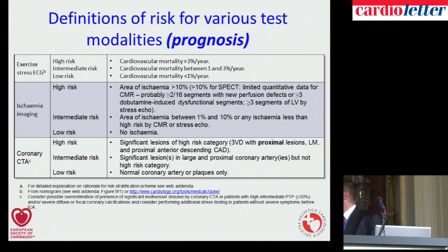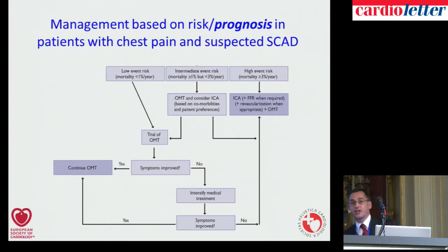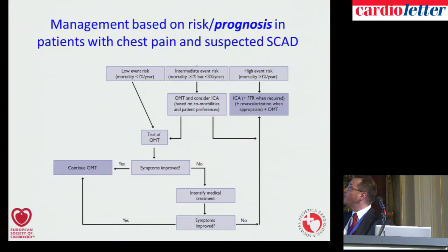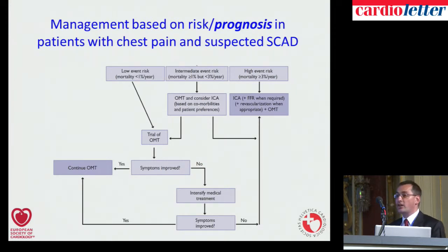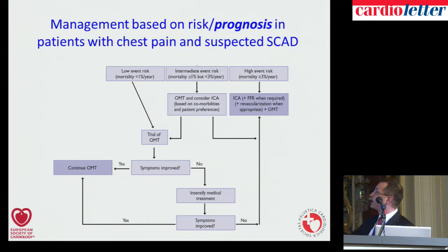Based on these prognostic considerations, action is determined by risk stratification categories. Low-risk patients should first undergo a trial of optimal medical therapy. For patients with intermediate probability, the choice between a trial of optimal medical therapy or direct coronary angiography depends on symptom severity, comorbidities, and patient preferences. In patients with high risk, one should proceed to invasive coronary angiography.